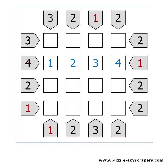Another easy starting point is to look for ones. They indicate that only one skyscraper is visible. This should be the highest skyscraper, which blocks the view to all the rest.